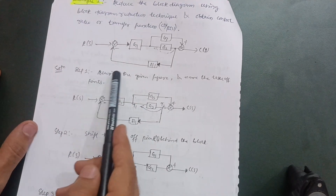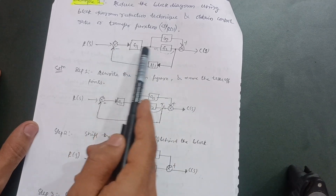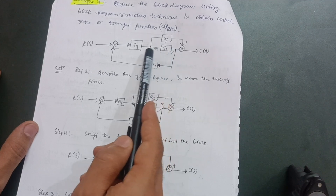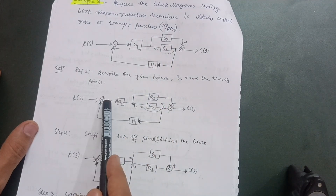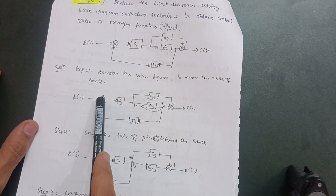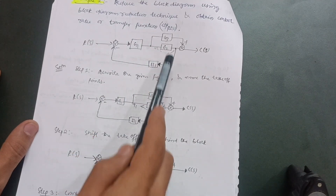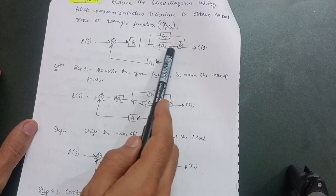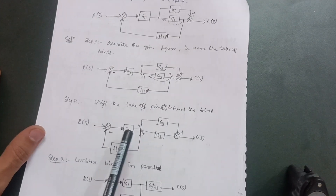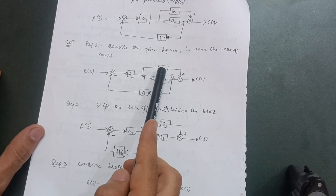First of all, rewrite the given figure and name the takeoff points. The takeoff point is here — one — and here is another one. I will rewrite the whole diagram as it is: summing point, G1, this is takeoff point D1, this is another takeoff point D2, summing point — the rest of the diagram is the same.